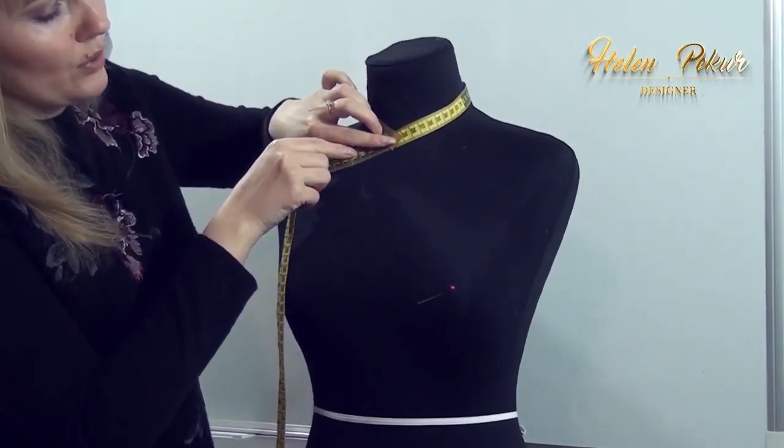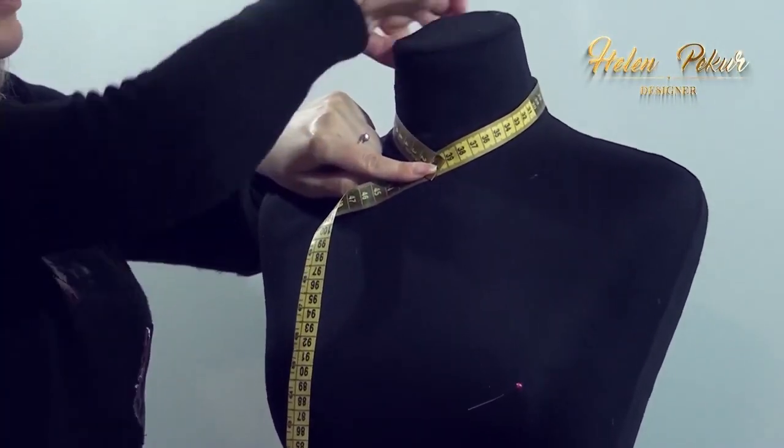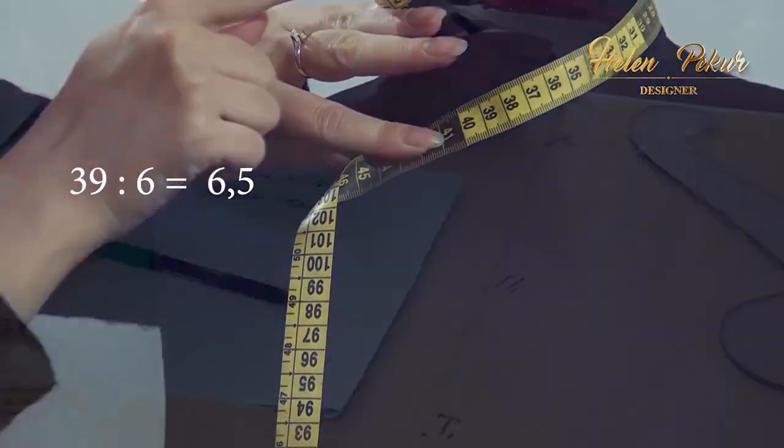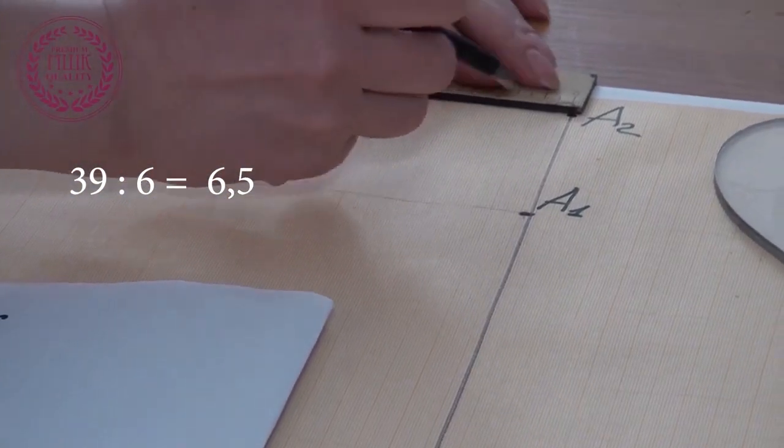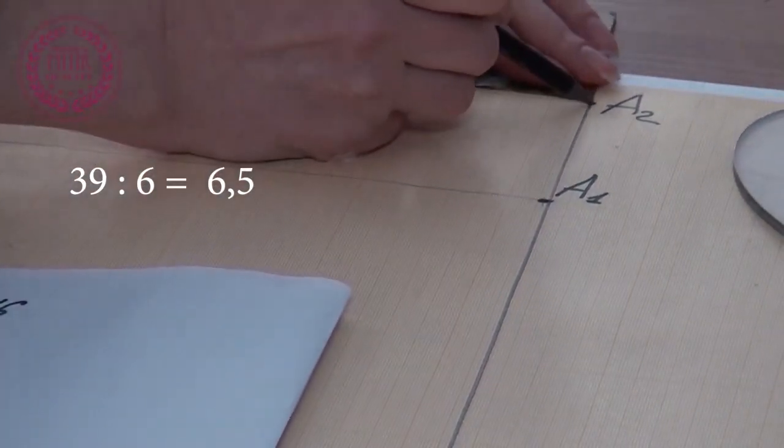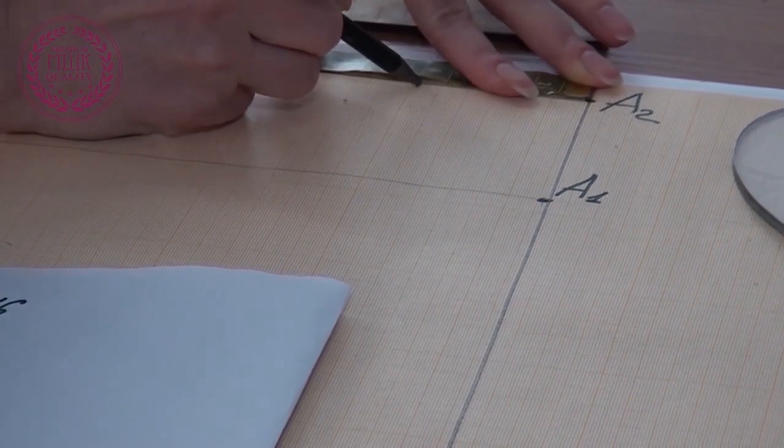Now I divide the measurement of the neckline by 6. And from point A2 to the left horizontally I postpone the result of this division. I mark point A3.